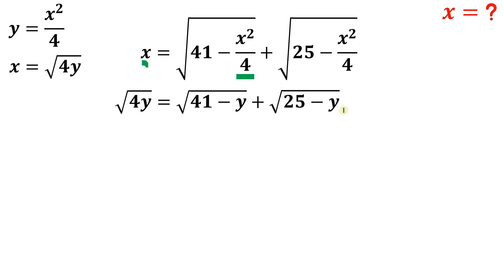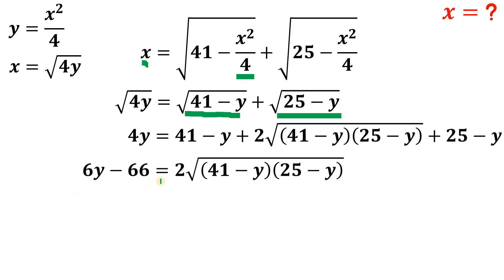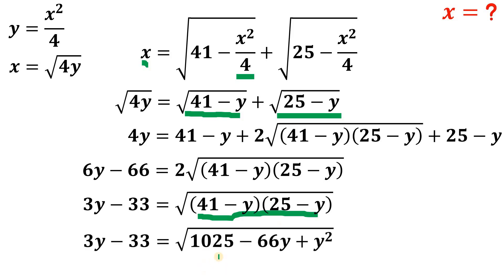To find the value of y, let's square both sides. Squaring gives us the square of the first term, plus twice the product of the second and third terms, plus the square of the last term. Combining like terms gives us 6y minus 66 equals 2 times the square root of (41 minus y) times (25 minus y). All coefficients are even, so divide both sides by 2. Then we multiply out the expression inside the radical: (41 minus y)(25 minus y) equals 1025 minus 66y plus y squared.